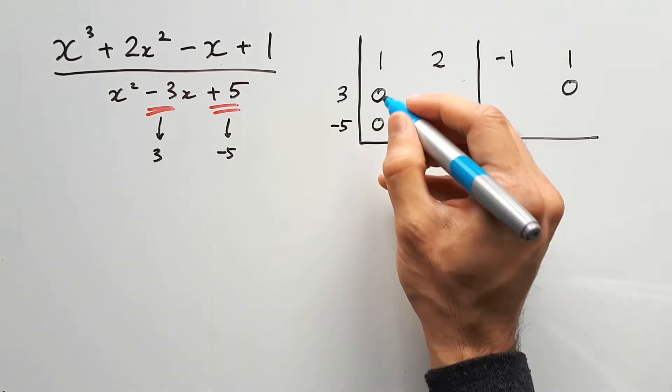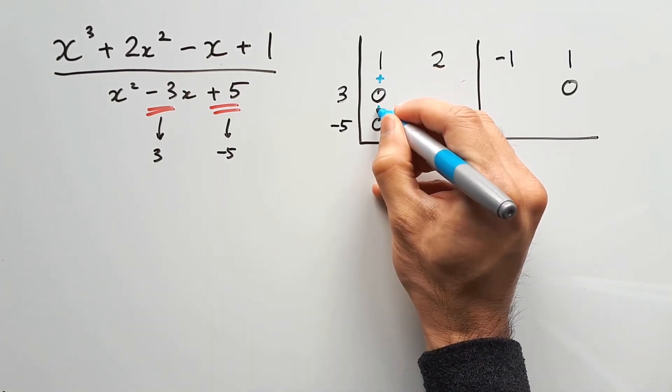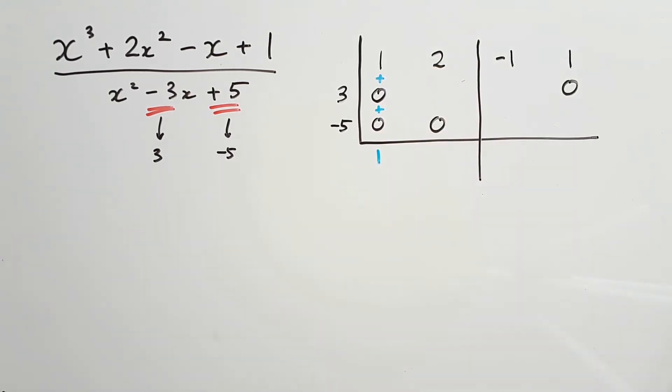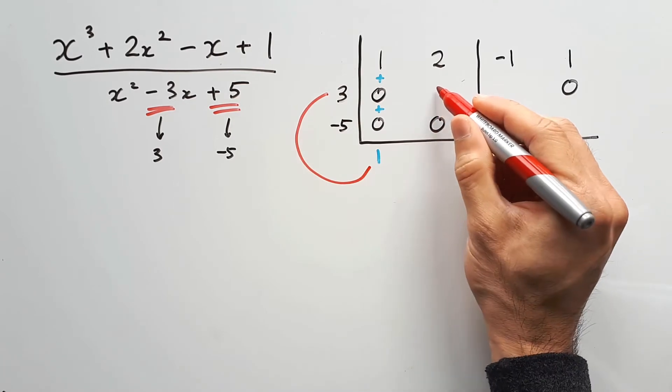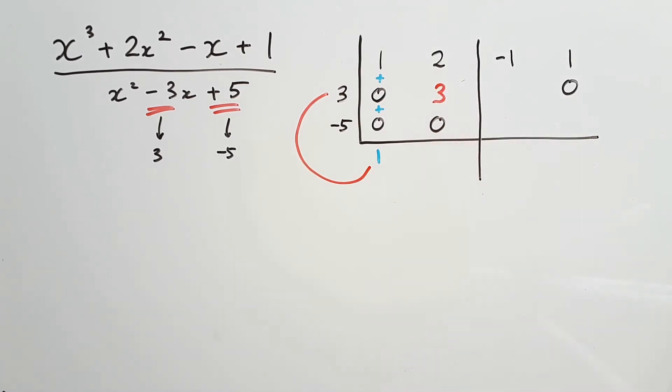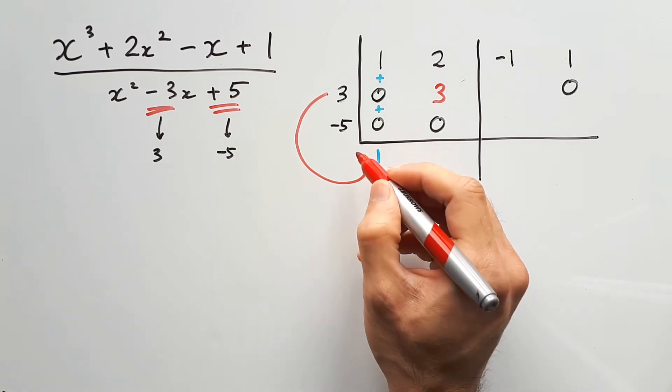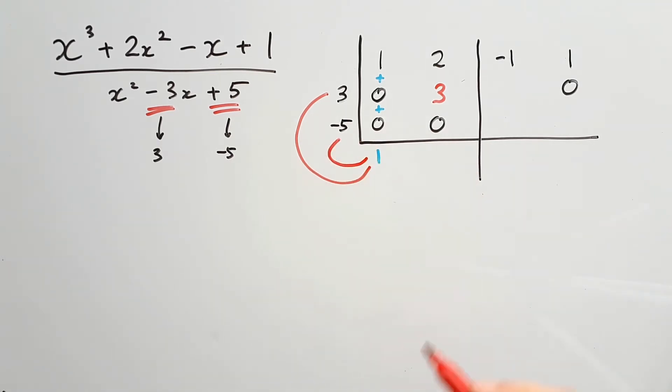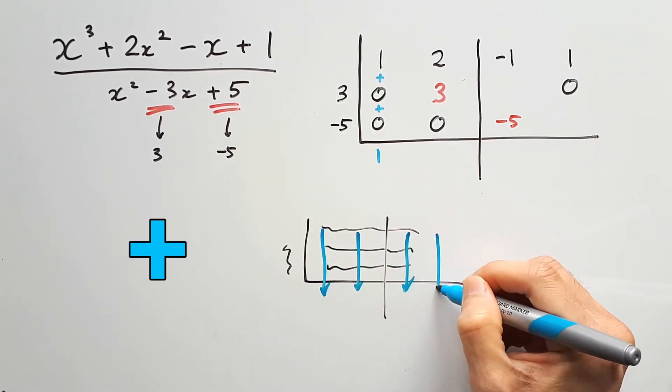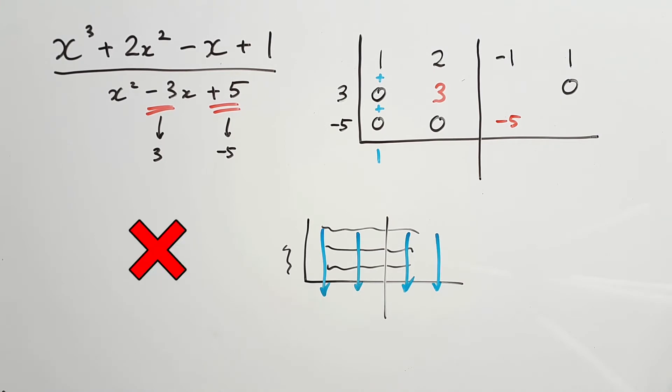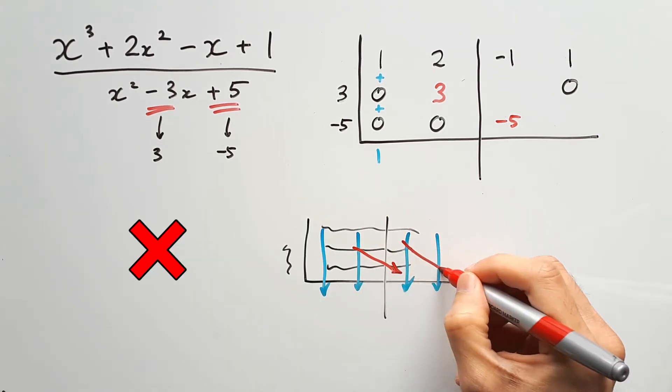So first we take 1, plus 0, plus 0, and we get 1. Now take that sum and multiply positive 3 first, the product is 3, and that goes into the same row as where you multiplied. Then you take 1 and multiply negative 5, putting that in the third row as negative 5. Just remember, when you're adding it always goes downwards, and when you're multiplying you have to write the numbers in a diagonal sequence.